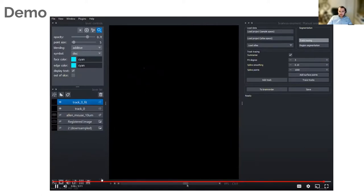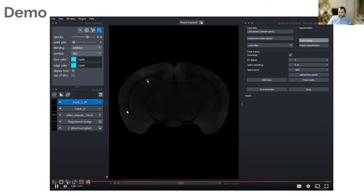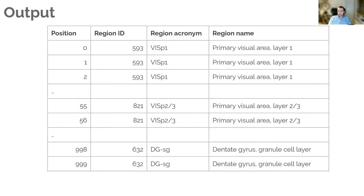Even if your probe is perfectly straight within the brain and hasn't bent at all, often you'll find that the probe in atlas space is actually bent because there's some non-linear warping between your raw data and the atlas.